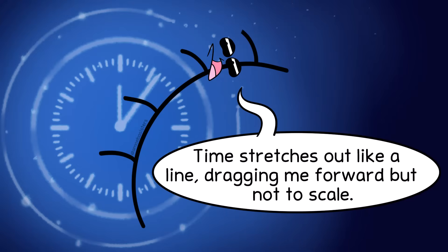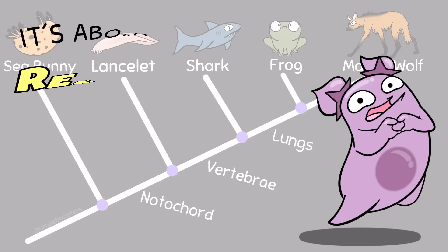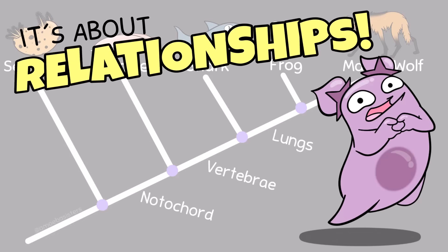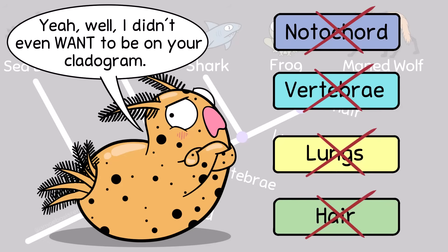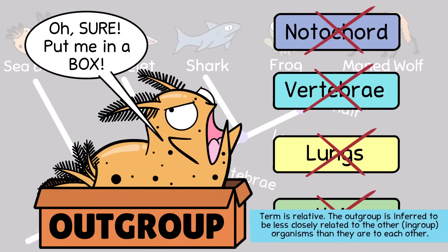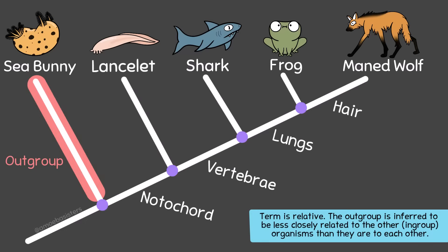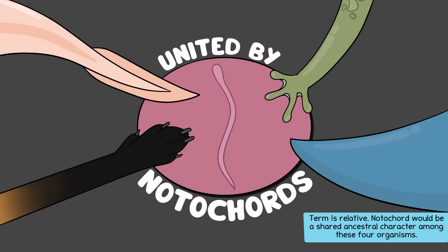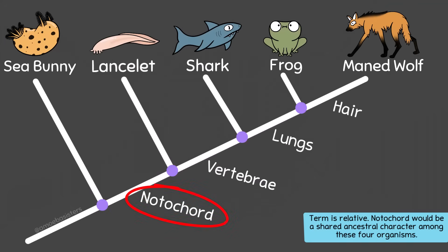Our line in the cladogram does not represent a time scale. Instead, our cladogram shows physical characteristics that these organisms may share and could show potential evolutionary relationships. The sea bunny doesn't share any of the listed characteristics with these organisms. If I'm looking at the lancelet, shark, frog, and maned wolf, I would consider the sea bunny — which does not share any of the listed characters — an outgroup. It has the least shared characters; in our example, it has none. If my focus is the lancelet, shark, frog, and maned wolf, the notochord is a shared ancestral character. All of them have a notochord at some point in their development.